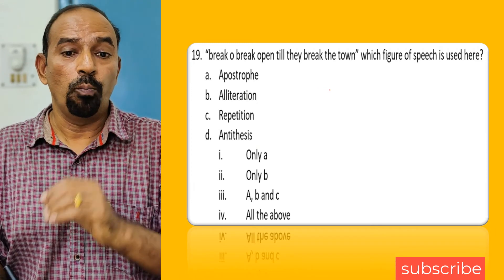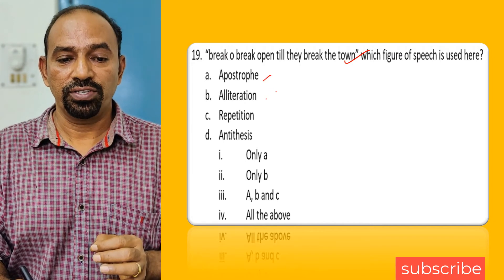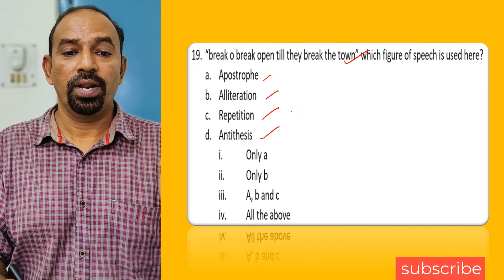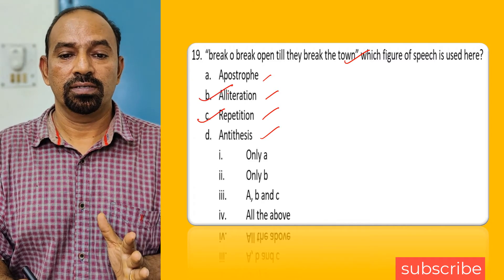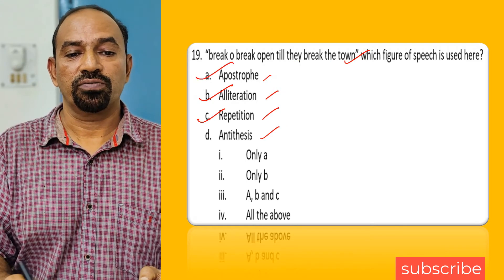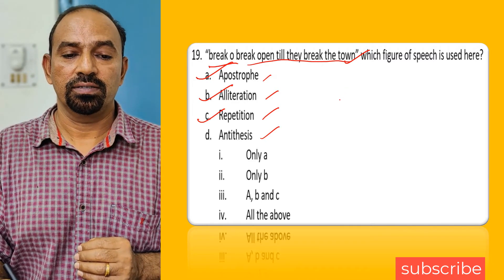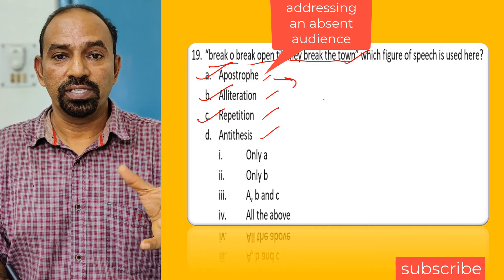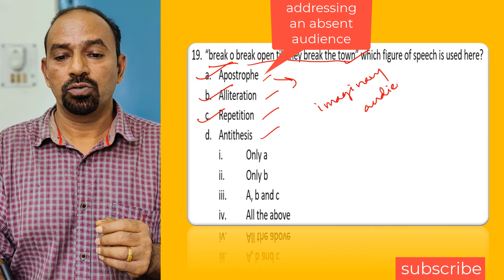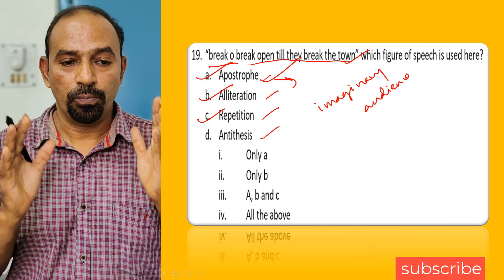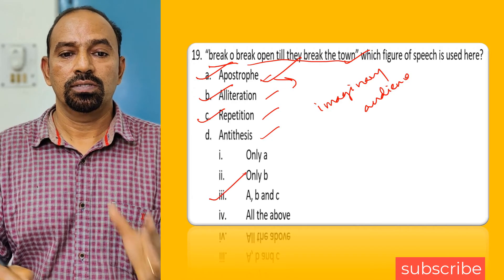Question nineteen: 'Break, O break open till they break the town' — which figure of speech is used? The options are apostrophe, alliteration, repetition, and antithesis. Repetition is clearly present. Alliteration is also there. 'Break, O break open' uses apostrophe — addressing an imaginary audience is called apostrophe. So three poetic devices are present: apostrophe, alliteration, and repetition. The right option is the third one.